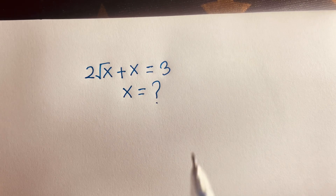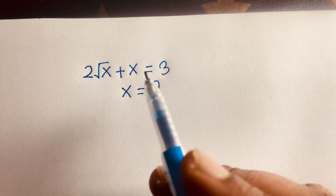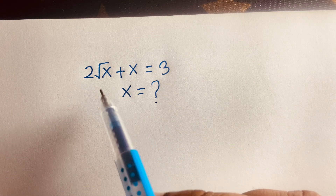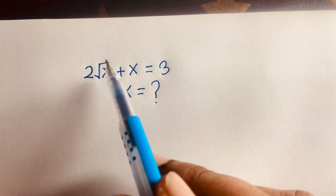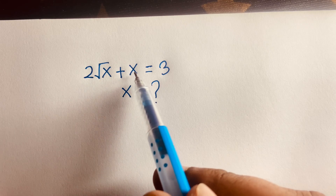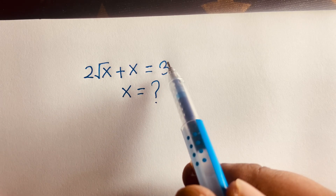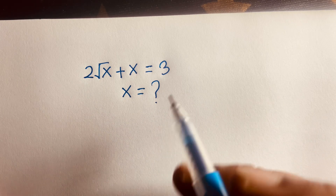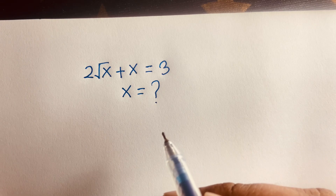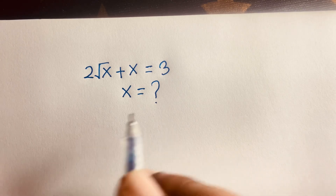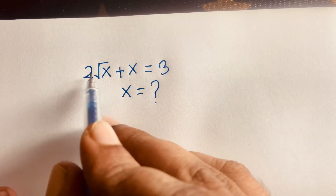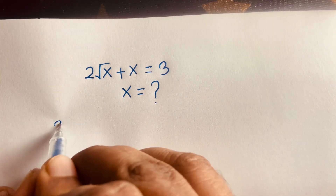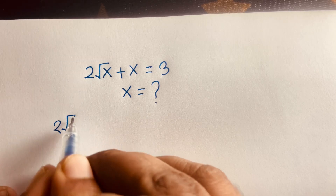Hello everyone. In this video we'll solve this junior math olympiad question: 2√x + x = 3. I'll solve this question using 2 methods.